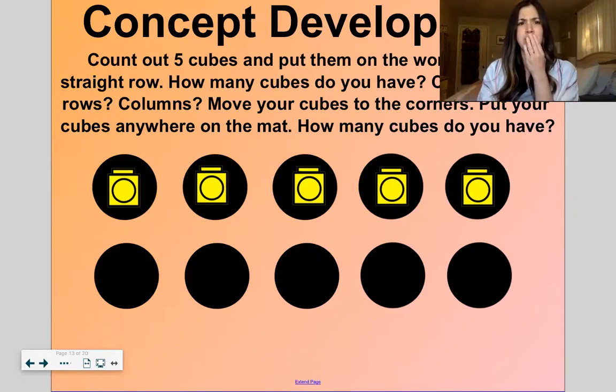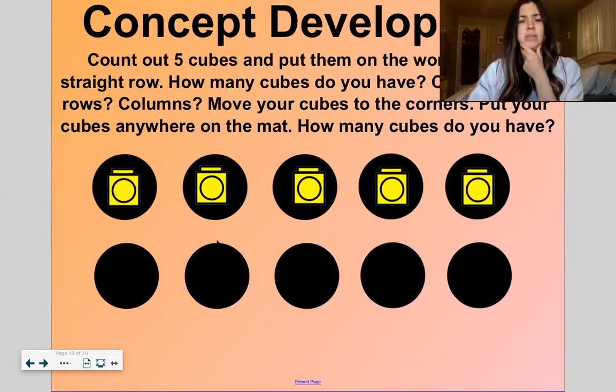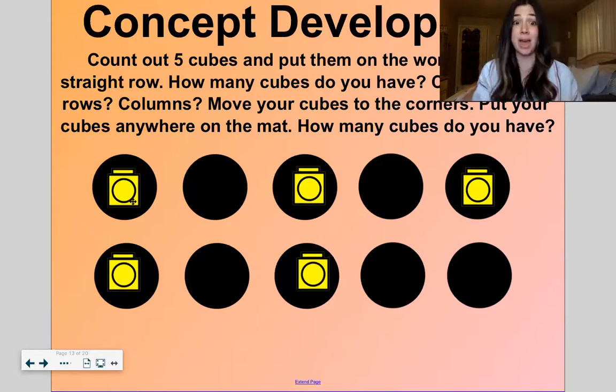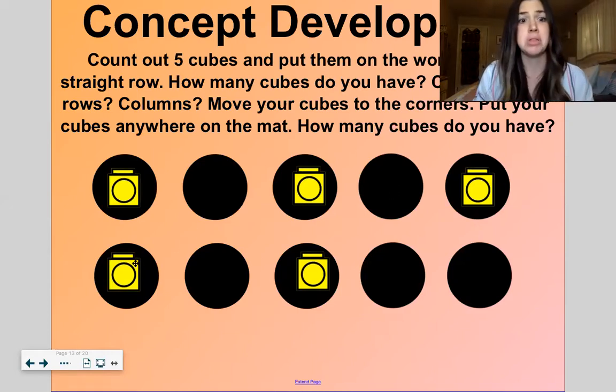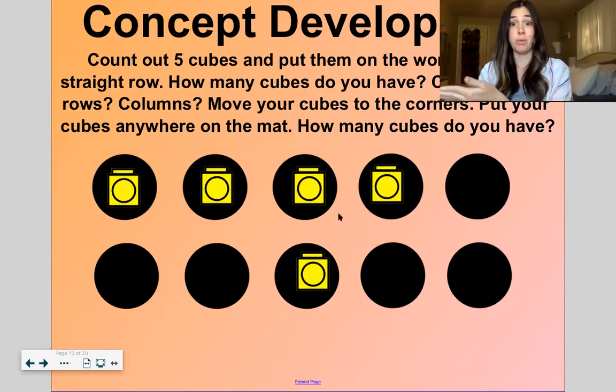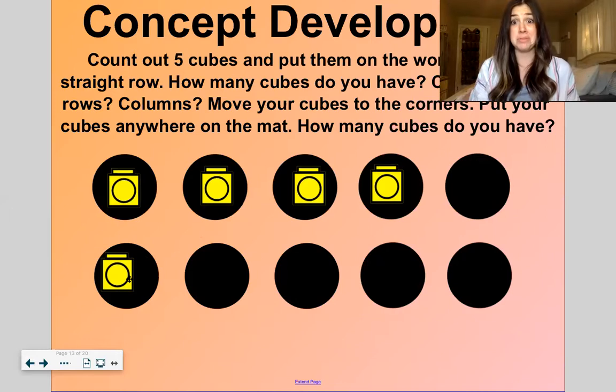Now can we create some columns. Columns go up and down. Let's see. I move one here and then one here. Oh I could have two columns with one left over. I could do that. I could also put four in one row and one in the next. That would give me five too, right? Let's do the next one.